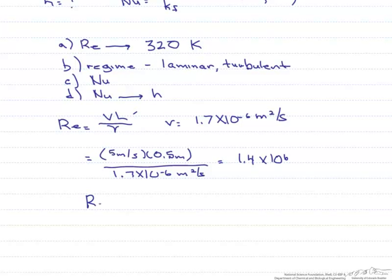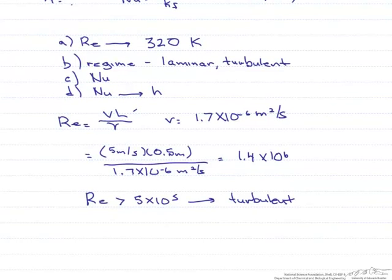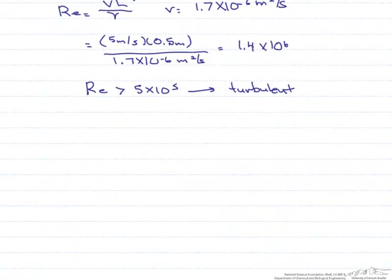So any Reynolds number that's greater than 5 times 10 to the fifth for a flat plate indicates that the flow is turbulent. So we look at our list of correlations, and we find a correlation for turbulent flow over a flat plate.